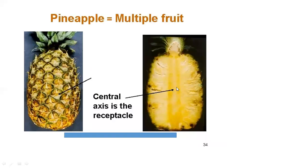Pineapple is a multiple fruit. The central axis is the receptacle. Multiple flowers from the entire inflorescence convert into this single fruit structure. Examples include pineapple and jackfruit.